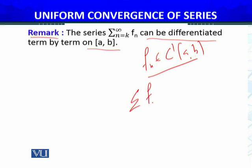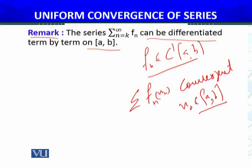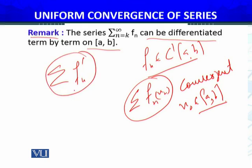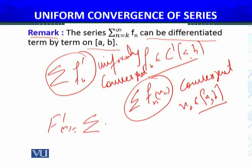Secondly, summation fn(x₀) converges. There must be some point x₀ belongs to [a,b] for which this is true. For the series fn(x₀), this series is convergent. Thirdly, fn dash—the series obtained from term-by-term differentiation—it should be uniformly convergent.